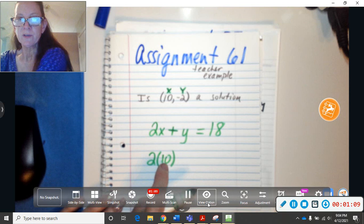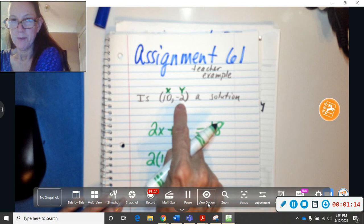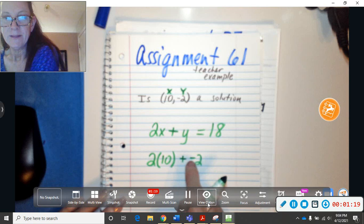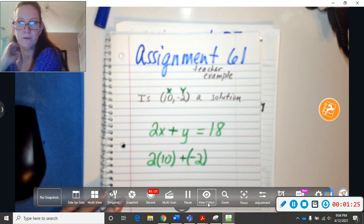Now I'm going to put plus, and instead of y, I'm going to put -2. Now I could just put -2 like that, but then that gets confusing with two signs next to each other. So I go like that, plus -2 equals 18.